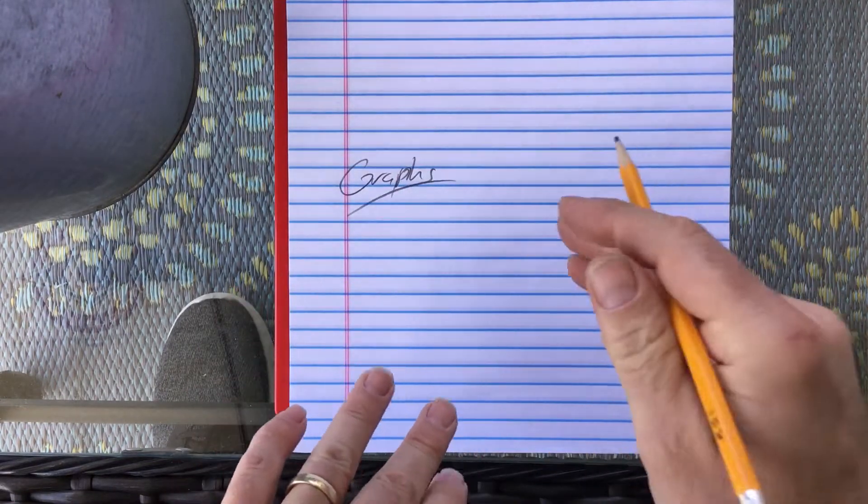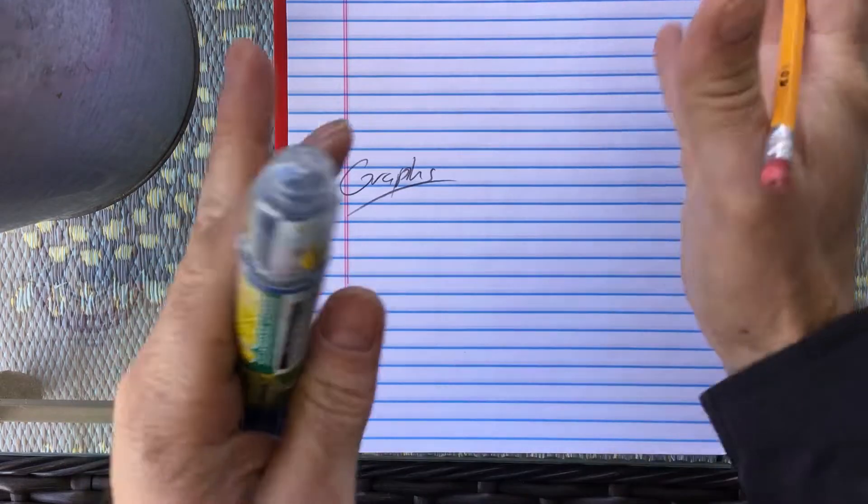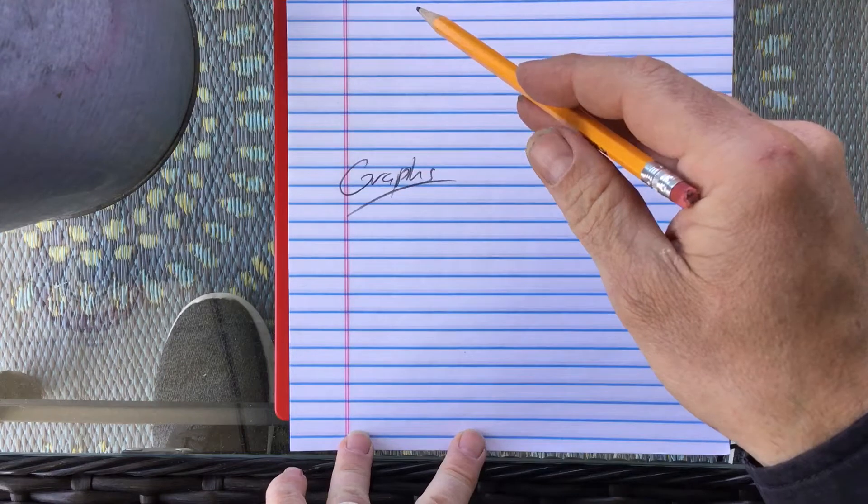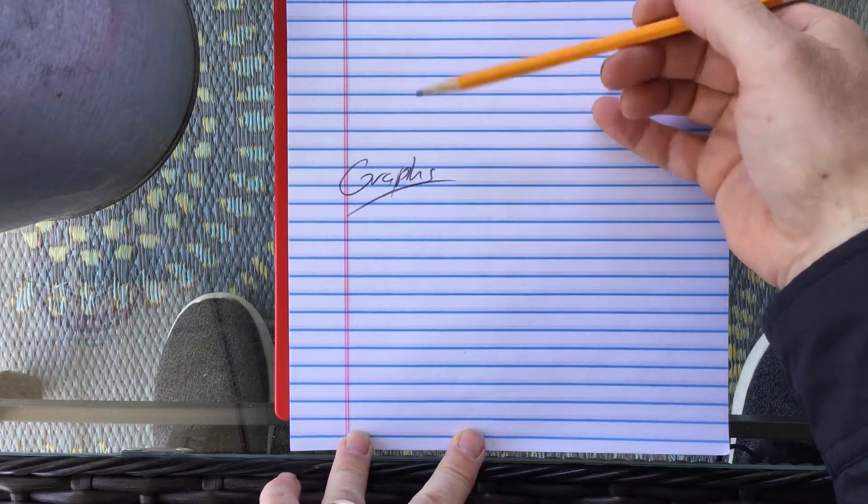Now, for the data table, you want to figure out some sort of grid or something that's easy for you to tally things down on and easy for you to then interpret and put on the graph.